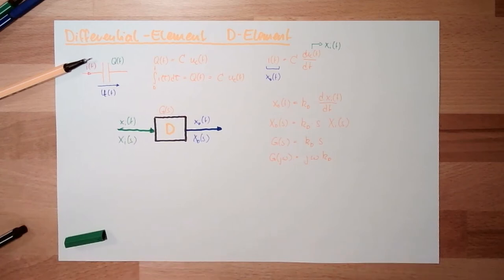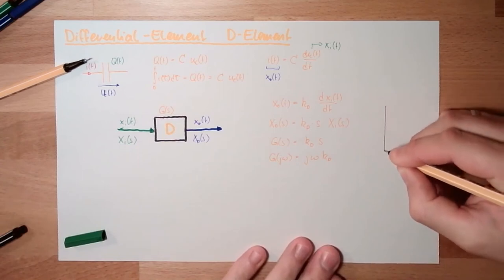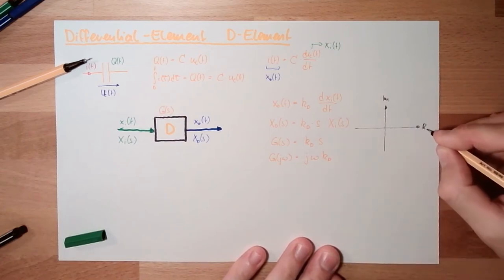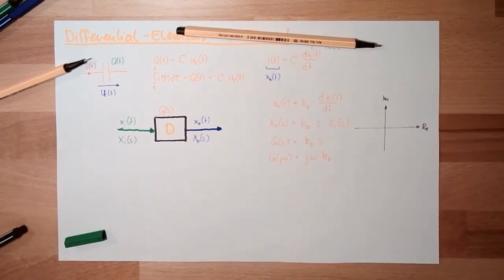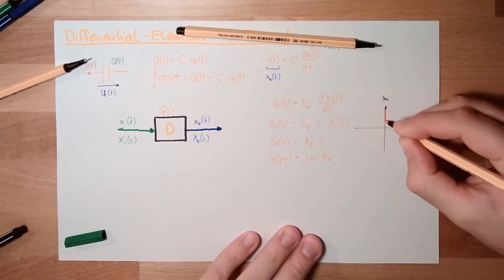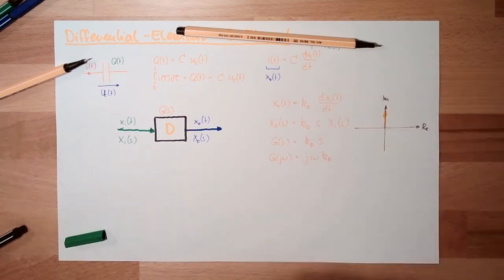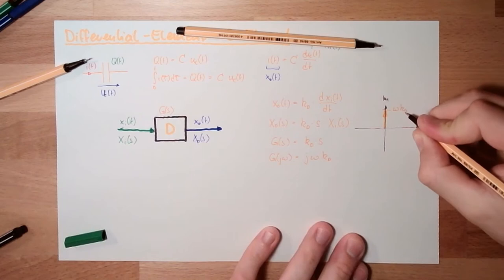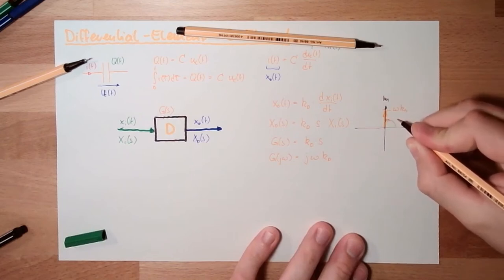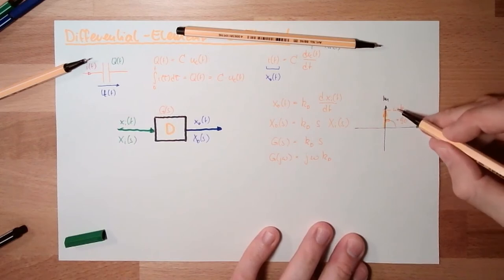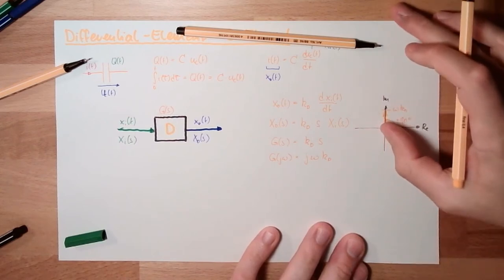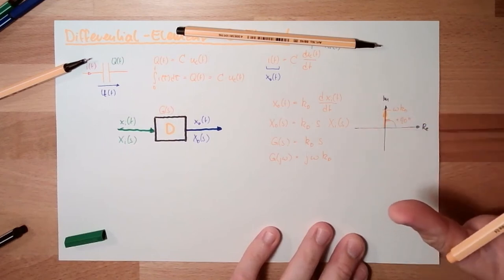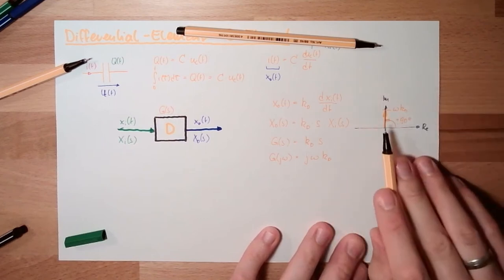Let's have a look again on our axis, imaginary axis, real axis. We do have here J, so this means we have only imaginary part. This is it. And the length here is just omega KD and here we do have plus 90 degrees. The bigger omega will be, the longer this will go up. If omega is zero, it will be at zero. But regardless, it will always stay at 90 degrees, because it's J omega KD. J is always pointing up.